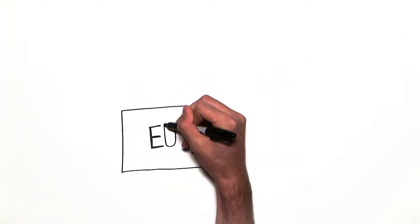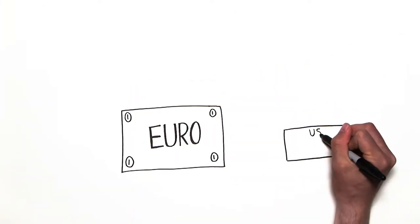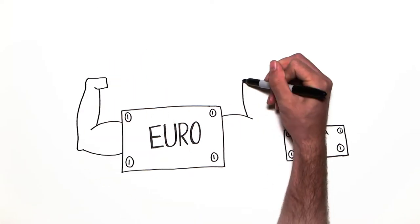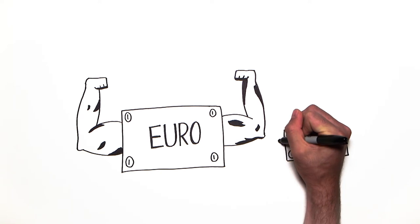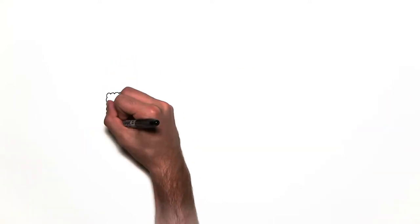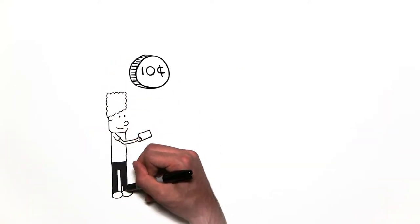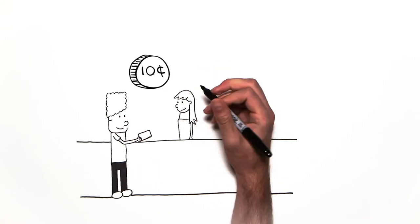But while all money does the same thing, not all currencies are worth the same amount. Recently, the euro was stronger than the US dollar, with one euro equaling about $1.10. That means one euro can buy about $0.10 more in goods and services than $1.